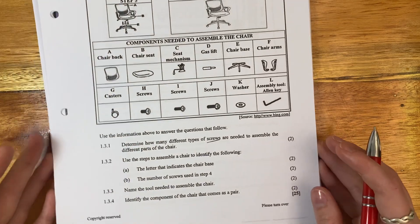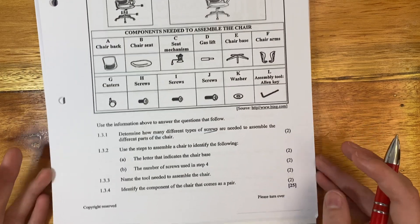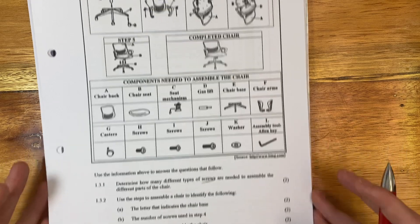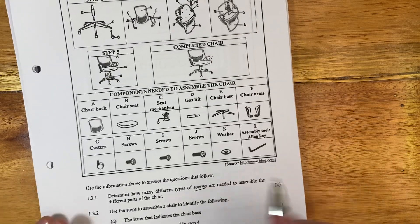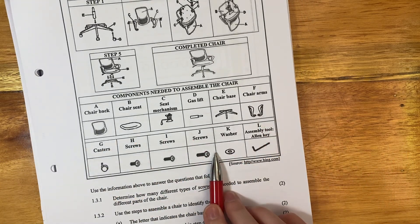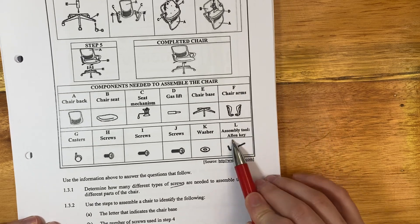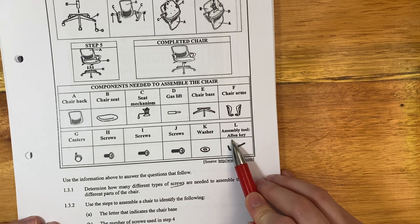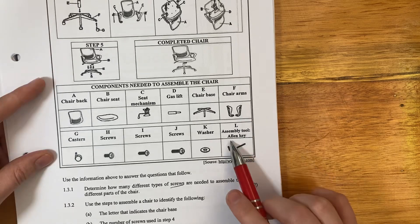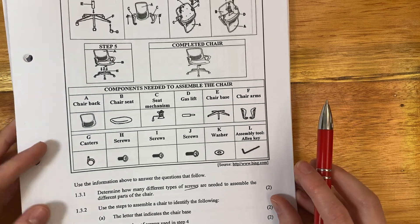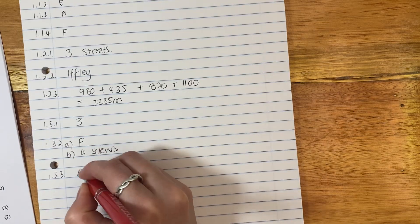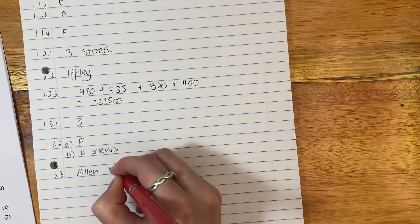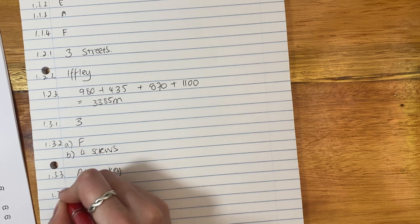1.3.3: Name the tool needed to assemble the chair. So this is where we're going to look at components. These are all parts of this chair. But here it says it's an assemble tool. And it is an Allen key. I used to think an Allen key was like named after Allen. But that's not how you spell Allen. So it's probably not named after Allen. So the tool that we need is Allen key, not Allen. An Allen key.